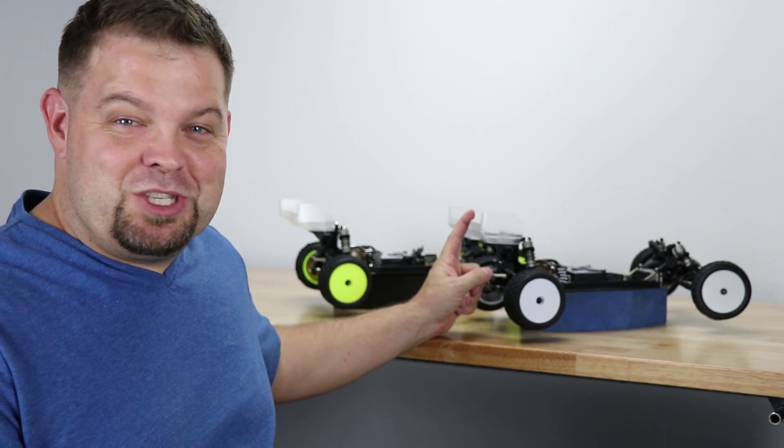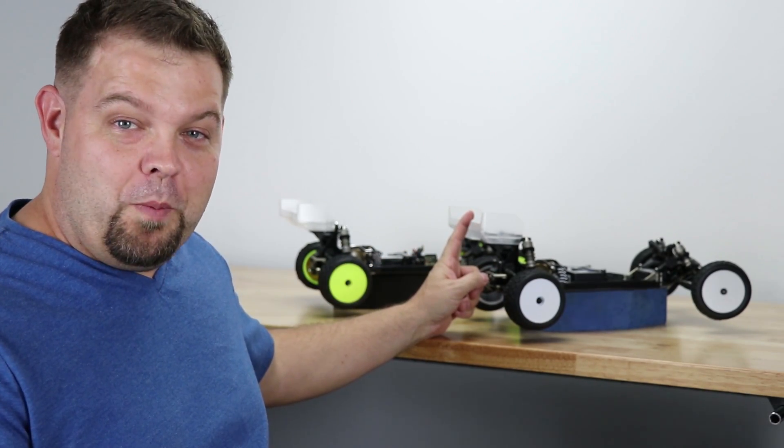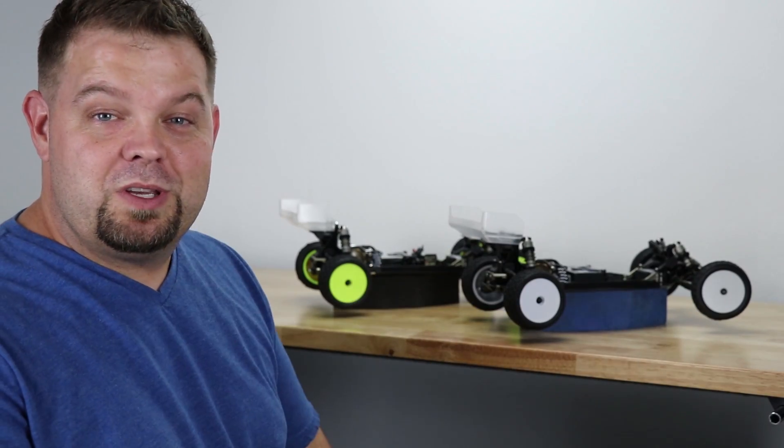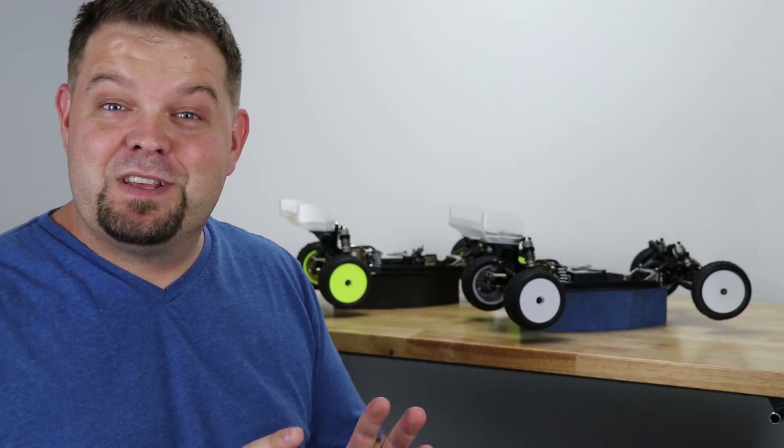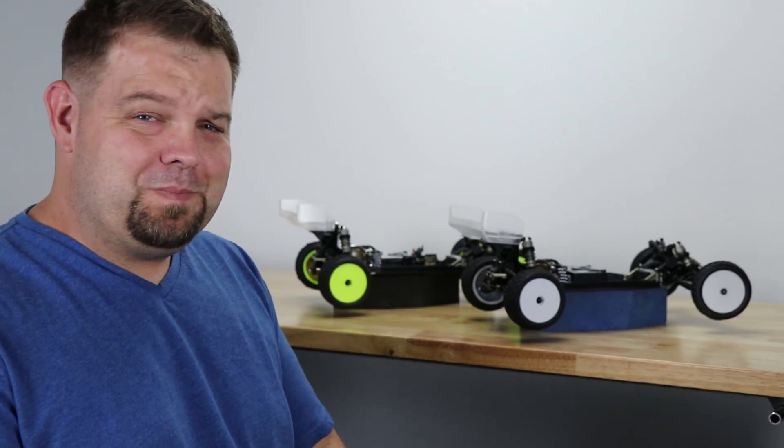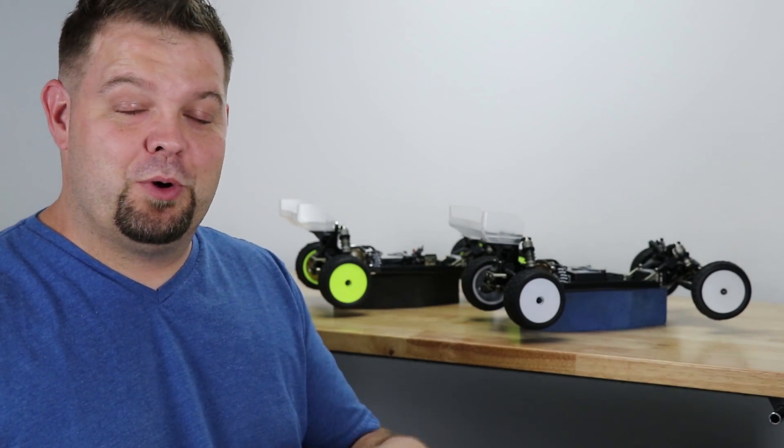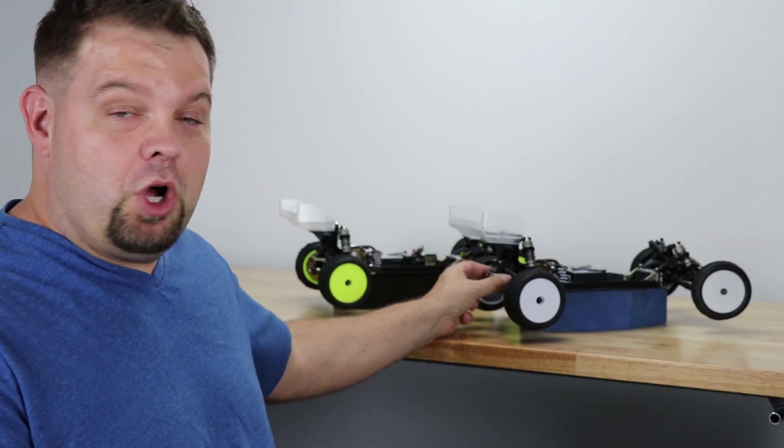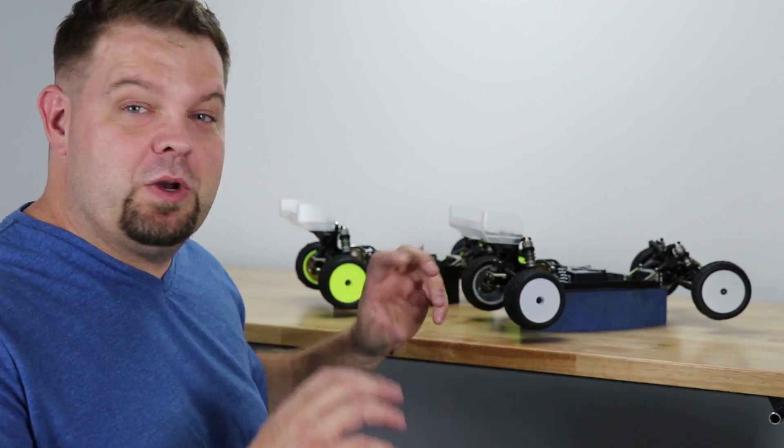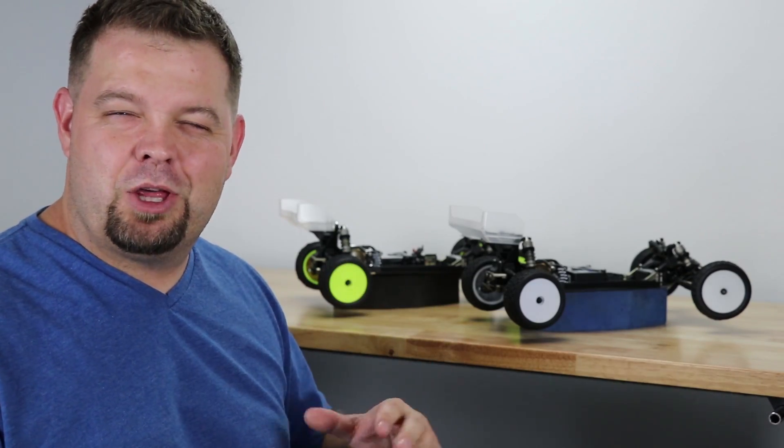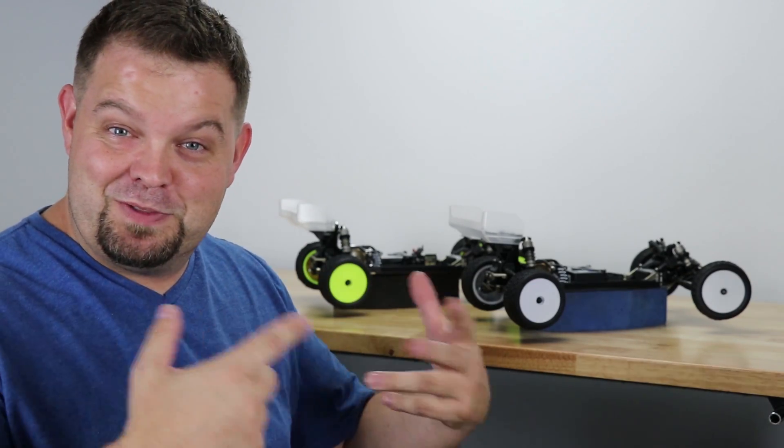This is going to be Project Super Stocker. It's a TLR22 4.0. It's got aluminum servo mounts, Lunsford titanium screws. I have the slipper eliminator for it, but I intentionally did not put it in when I installed the ceramic bearings in the transmission because I didn't want to change all of the rotating mass. I thought that might throw off the results of this little example here.